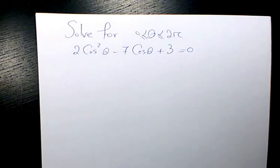What's up guys, this is Massey. Welcome to my channel. In this video I want to show you how to solve this trig equation. The question and the equation is 2 cosine squared theta minus 7 cosine theta plus 3 equals to 0.